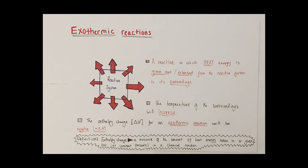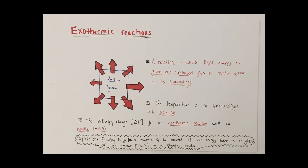Thinking about an exothermic reaction, the enthalpy change — or delta H, the symbol used for enthalpy change — for an exothermic reaction will always be a negative value, because the chemical system is giving out heat energy from the system to the surroundings.